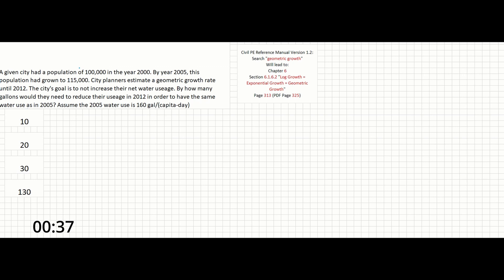So the key words in this problem related to population growth are geometric growth rate. We can search for this in our reference manual taking us to chapter 6, section 6.1.6.2 to a section called log growth equals exponential growth equals geometric growth. A long title, but it does give you the direct equation that you'll need.